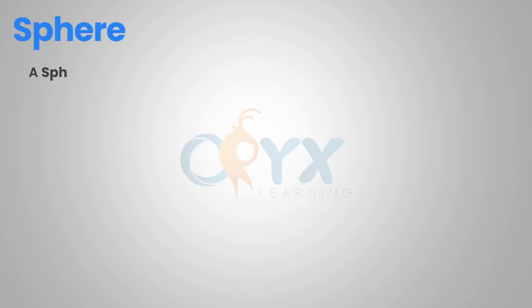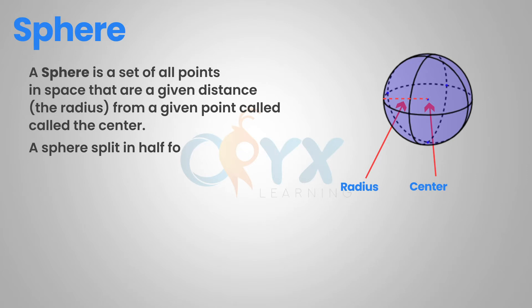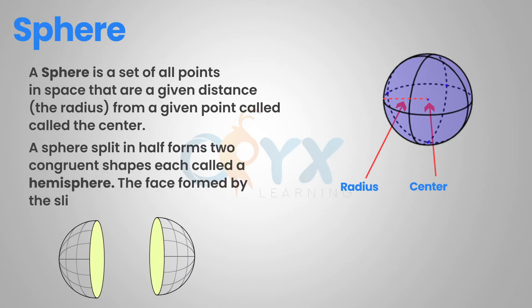A sphere is a set of all points in space that are a given distance — the radius — from a given point called the center. As you can see in the diagram, the center is in the center of the sphere and the radius goes from the center to a point on the sphere. A sphere split in half forms two congruent shapes called a hemisphere. The face formed by the slice is a circle.